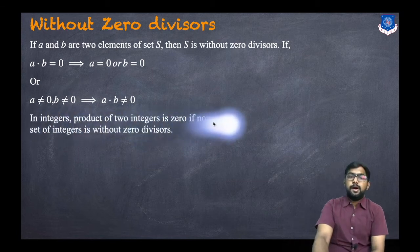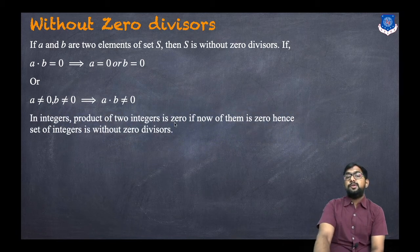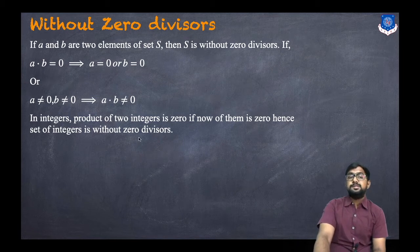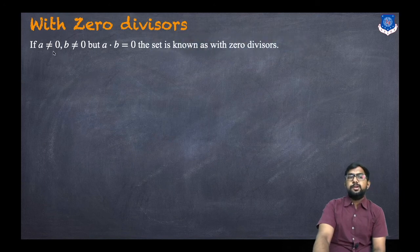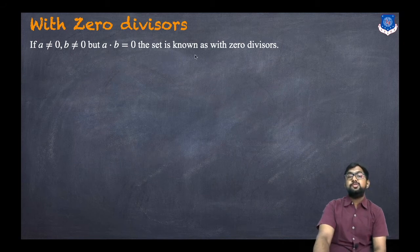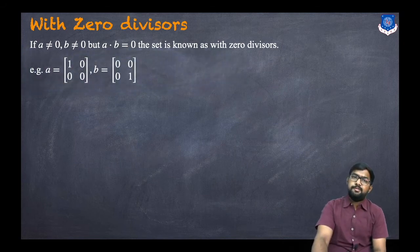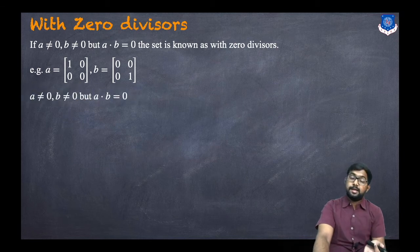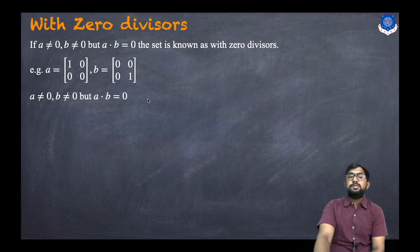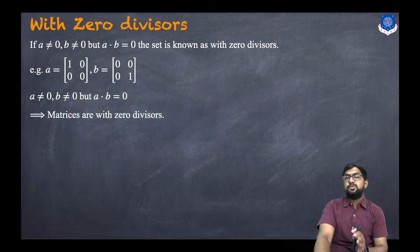In integers, the product of two integers is zero only if at least one of them is zero, so the set of integers is without zero divisors. For a ring with zero divisors: if a ≠ 0 and b ≠ 0 but a·b = 0, the set has zero divisors. For example, take matrices a = [[1,0],[0,0]] and b = [[0,0],[0,1]]; both are non-zero but their product is 0, so these matrices form a ring with zero divisors.